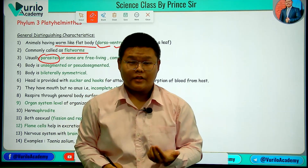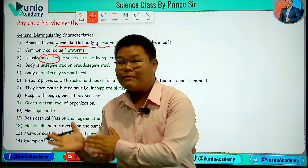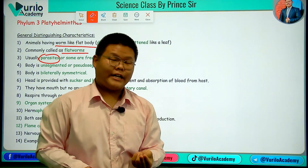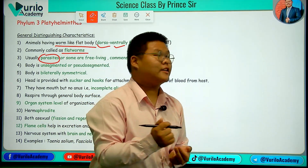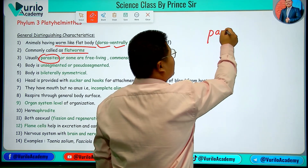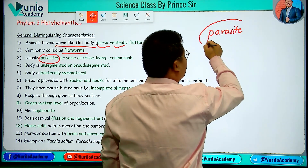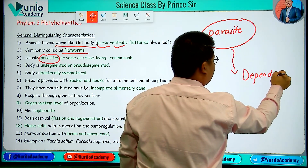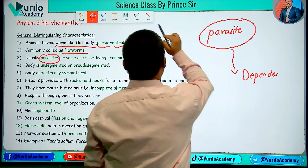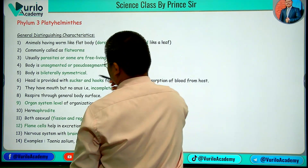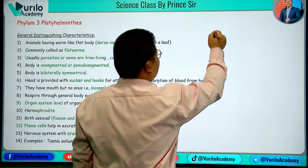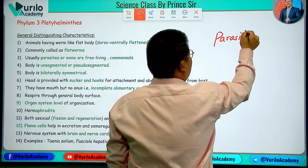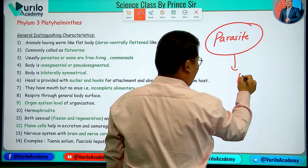Phylum Platyhelminthes is basically parasitic. What does parasite mean? Parasites are those organisms that are dependent — they depend upon a host.